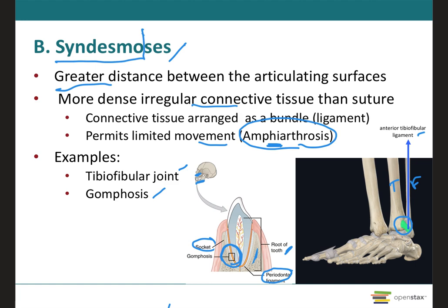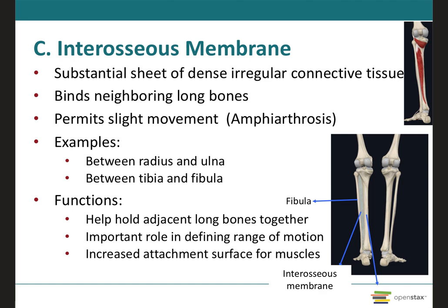You can avoid periodontal disease by using dental floss on a daily basis. The final category of fibrous joint is the interosseous membrane — a substantial sheet of dense irregular connective tissue that binds neighboring long bones and permits slight movement, also characterized as an amphiarthrosis. There are two principal interosseous membrane joints in the human body: one between the radius and ulna in the forearm, and one between the tibia and fibula in the leg.